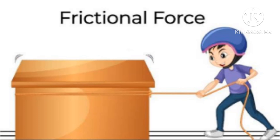When an object is sliding or rolling on a surface, a force comes into play between the two surfaces in contact. It tries to stop the object from moving — this force is called the force of friction. This force not only tends to stop a moving object but also tends to stop a stationary object from moving.